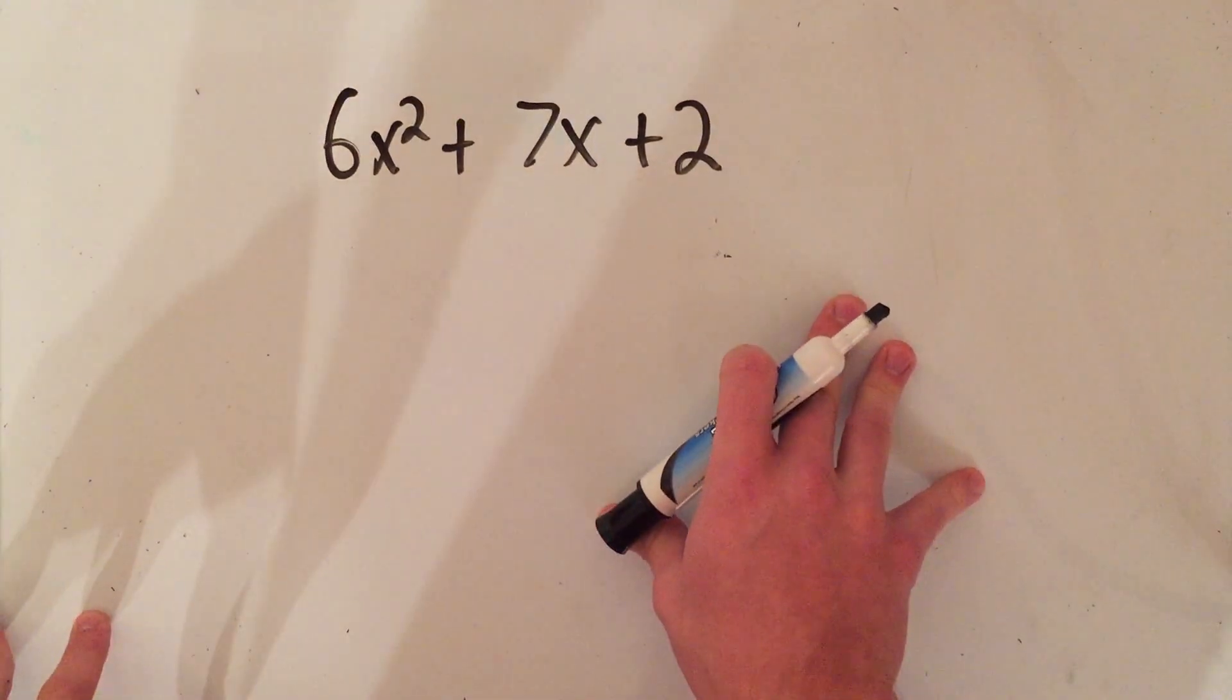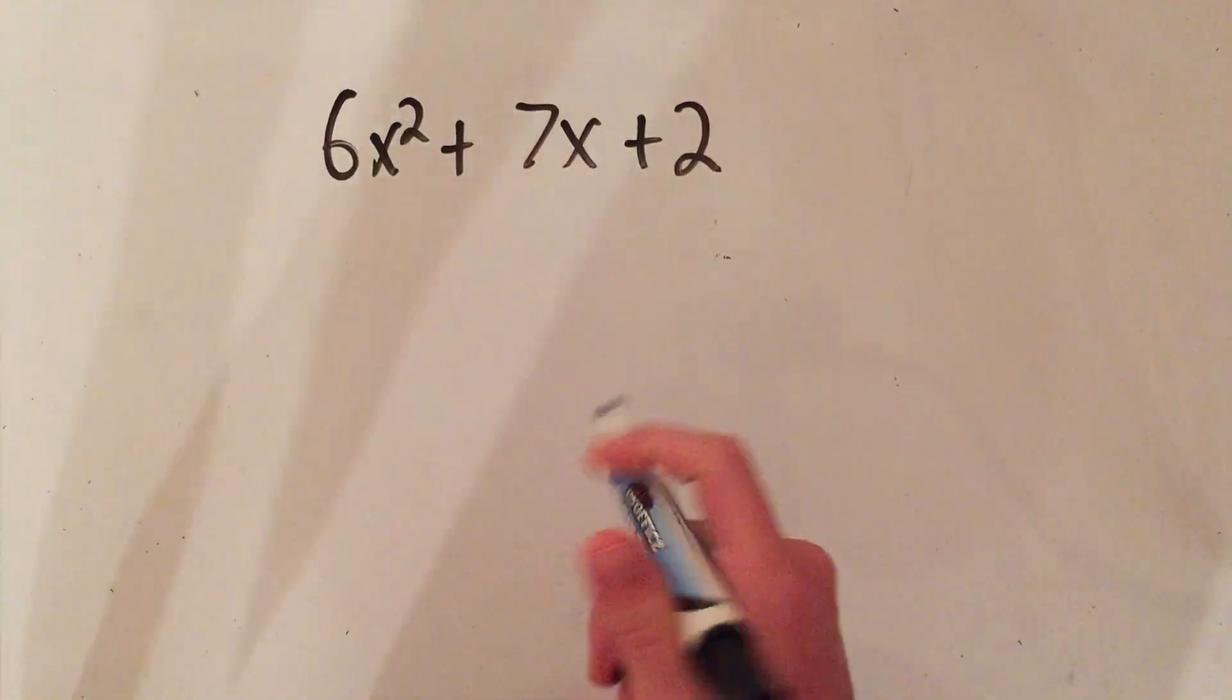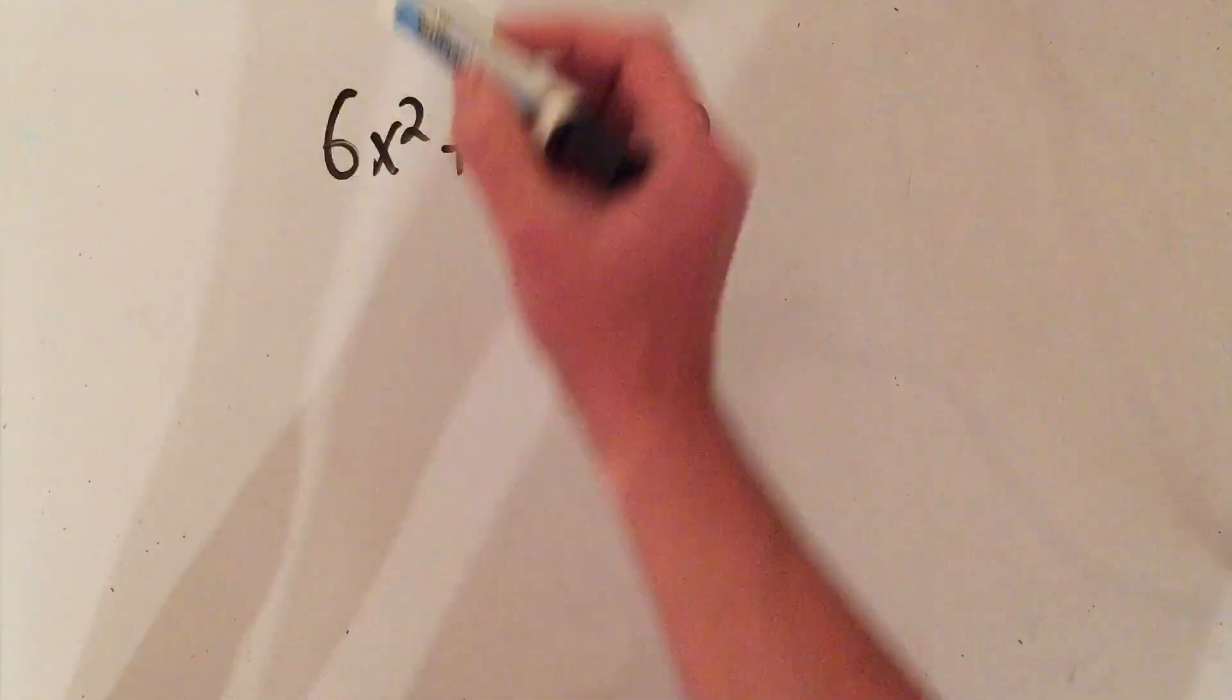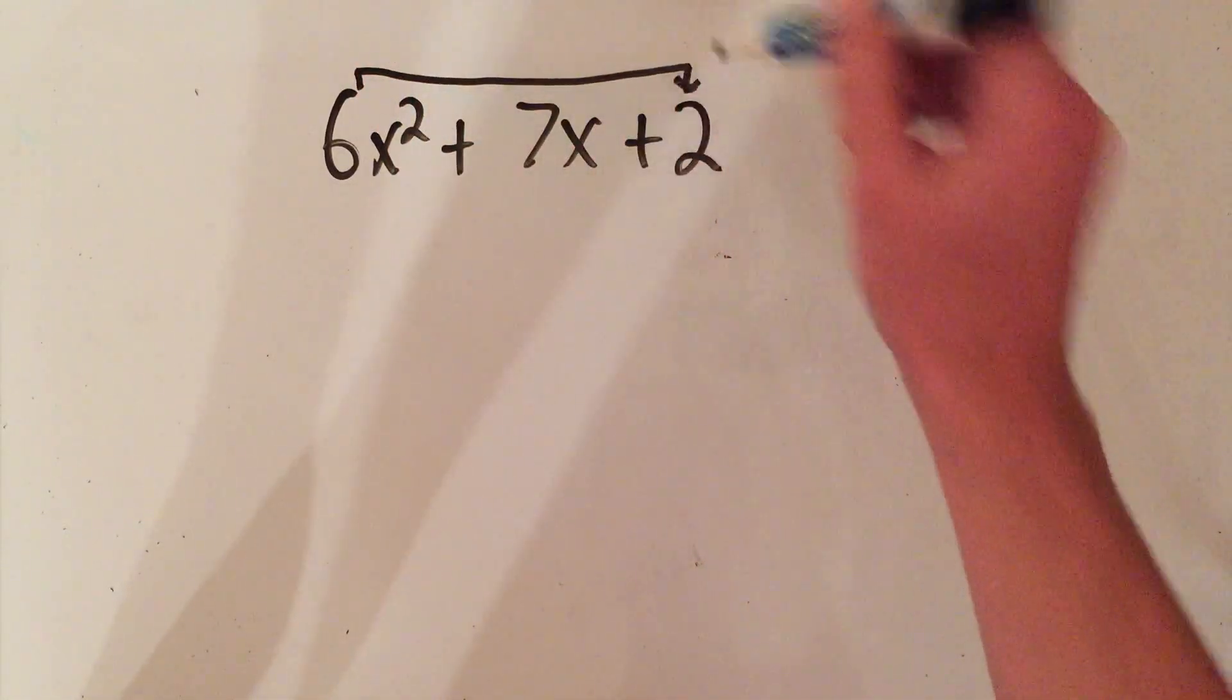But I learned a trickier, quicker way to do it. It's called - I guess I've heard it called - the slide and divide by my co-worker. So here's how it works: take this 6, slide it over there and multiply by the 2.